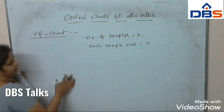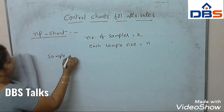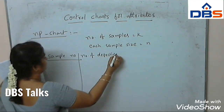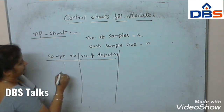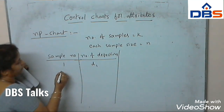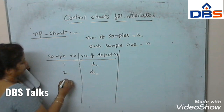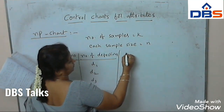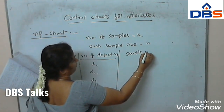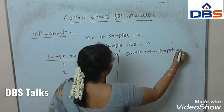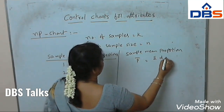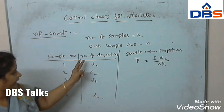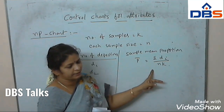The data will be recorded as follows: sample number and number of defectives. For sample 1, the number of defectives is D1; for sample 2, D2; for sample 3, D3; and so on up to sample K, which is Dk. The sample mean proportion P-bar equals sigma Di divided by N times K.